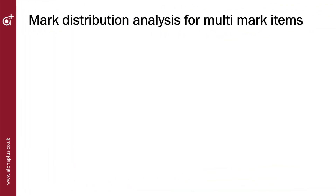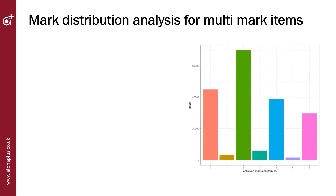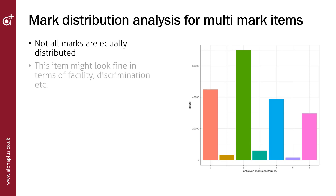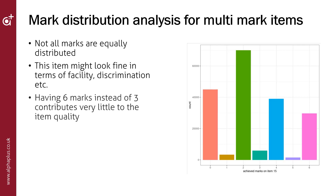Mark distribution analysis looks at how the marks on multi-mark items are scored. In the graph you can see the proportion of student answers that scored marks between 0 and 6. The mark distribution is very uneven and marks 1, 3 and 5 are not scored very often. This odd distribution with dead marks often points to a problem in the way the mark scheme is designed or markers are trained to use it. In fact, having 6 marks instead of 3 doesn't really contribute much to the assessment. Mark distribution graphs can also point to items where no students get full marks or where no students score 0, which may indicate a mark scheme that is too stringent or too generous.